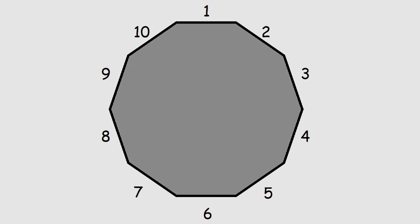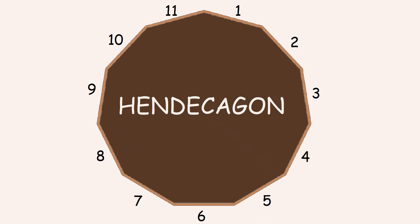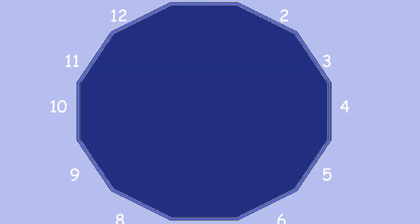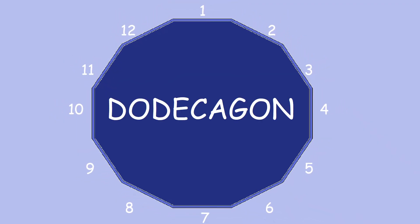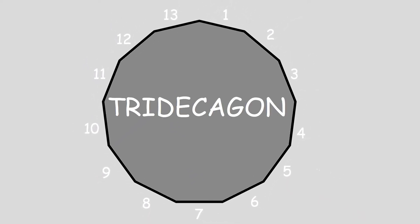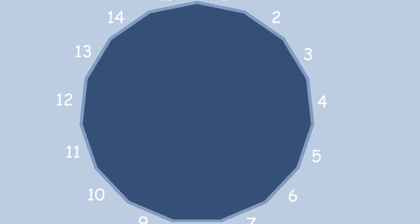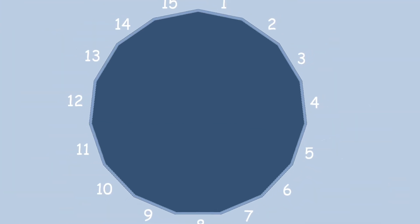What's a 10-sided shape? Decagon! What's an 11-sided shape? Hendecagon! What's a 12-sided shape? Dodecagon! What's a 13-sided shape? Tridecagon! What's a 14-sided shape? Tetradecagon!